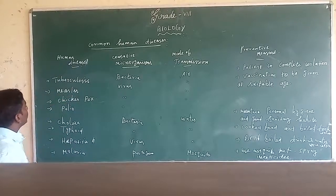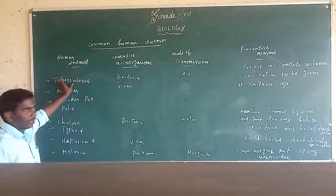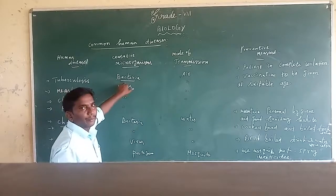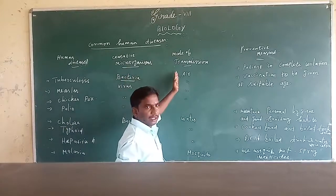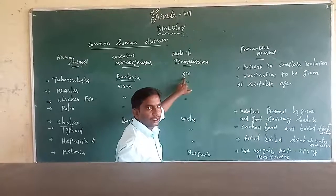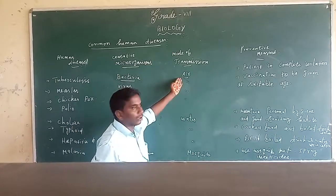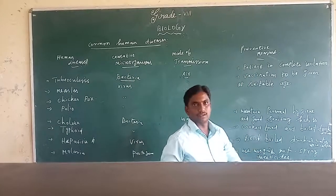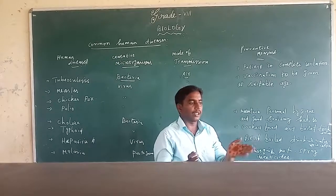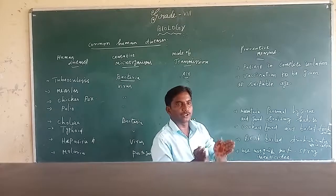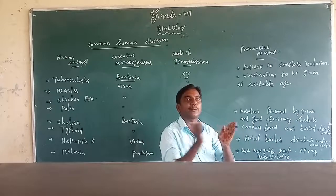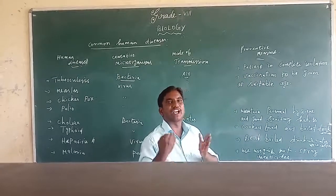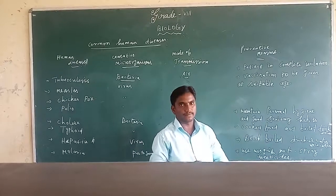The first disease is tuberculosis. This disease is caused through bacteria, and it is transmitted through the air. How can we prevent tuberculosis? First, the patient is completely isolated — separated from others. Second, vaccination should be given at the suitable age.